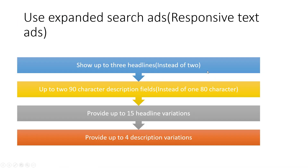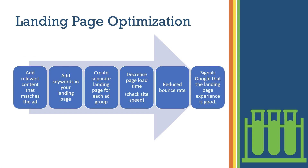The next tip is to use expanded search ads, also known as responsive text ads. With expanded search ads, you are able to show up to three headlines instead of two, and up to two 90-character description fields instead of just one 180-character field. Naturally, you're getting more real estate to add more text in the headline and description, which means your ad occupies more space. You're able to add more keywords and more information, thereby increasing your click-through rate. Use expanded search ads — it's the new version where Google allows up to three headlines and two descriptions.